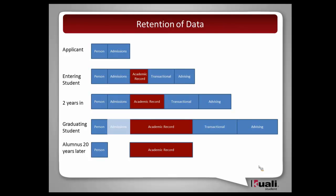Now let's look at the graduating student — at the end of their career. Their person data is still the same. The admissions data hasn't really been touched, it's still there. The academic record is now quite sizable — four years' worth of work in there. Transactional data has continued to grow in terms of registration records and all the different transactions. And of course, their advising file has continued to grow, especially as they perform senior audits and different things that go through the advising process.